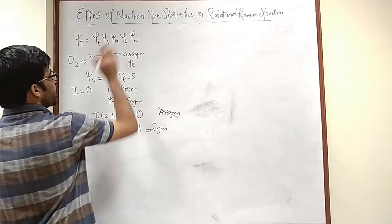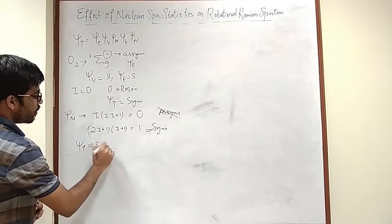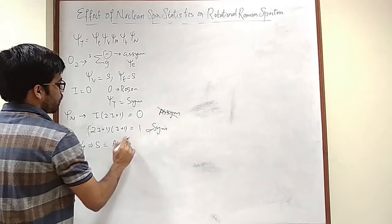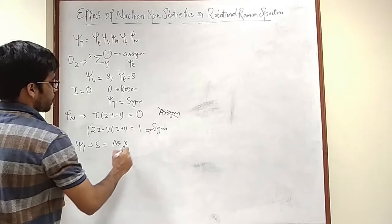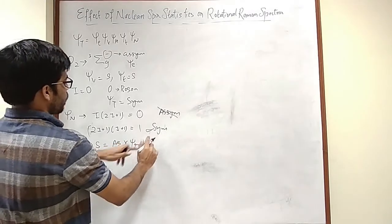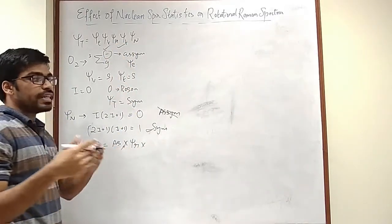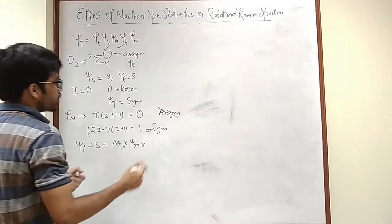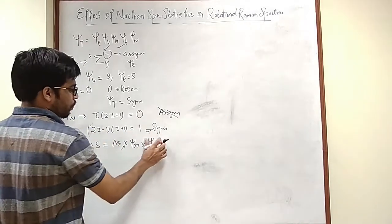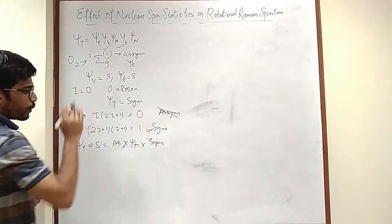So what am I remaining with here? I have psi total to be symmetric. I have psi electronic which is asymmetric multiplied by psi rotation multiplied by psi vibration and translation. Since vibration and translation are symmetric they are not going to make any effect. So psi nuclear turns out to be symmetric, so this also is not going to have any effect.